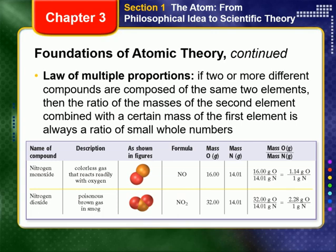It was also known that two elements sometimes combine to form more than one compound. For example, the elements carbon and oxygen form two compounds, carbon dioxide and carbon monoxide. Consider samples of each of these compounds, each containing one gram of carbon. The ratio of the masses of oxygen in these two compounds is exactly 2.66 to 1.33, or two to one. This illustrates the law of multiple proportions. If two or more different compounds are composed of the same two elements, then the ratio of the masses of the second element combined with a certain mass of the first element is always a ratio of small whole numbers.